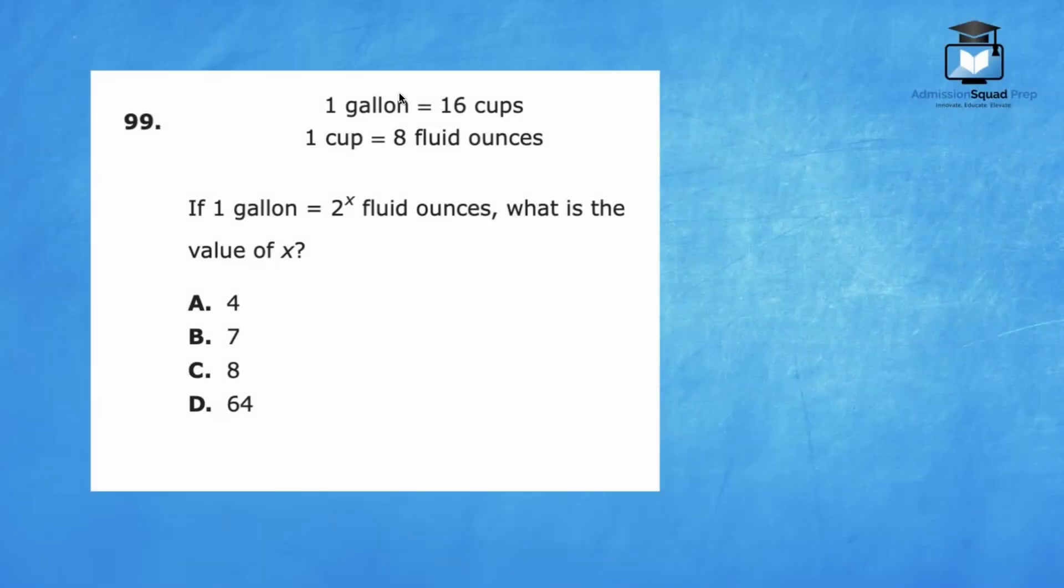Number 99. One gallon equals 16 cups and one cup equals eight fluid ounces. If one gallon equals two to the x fluid ounces, what is the value of x? We can use the transitive property to solve. The transitive property states that if a equals b and b equals c, then a equals c. I notice in both of these conversions, cups is a part of the conversions. So we will try to equalize these amounts.